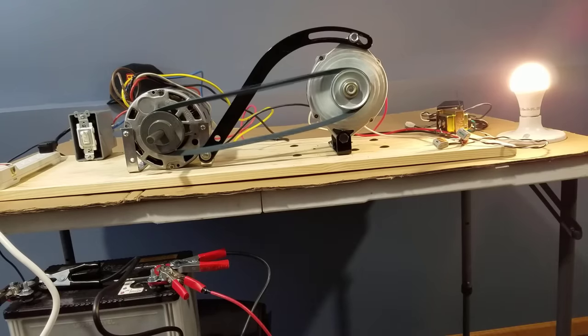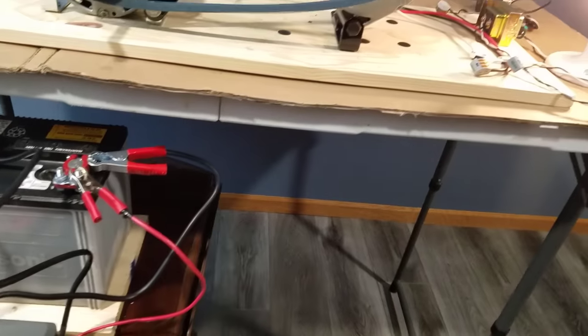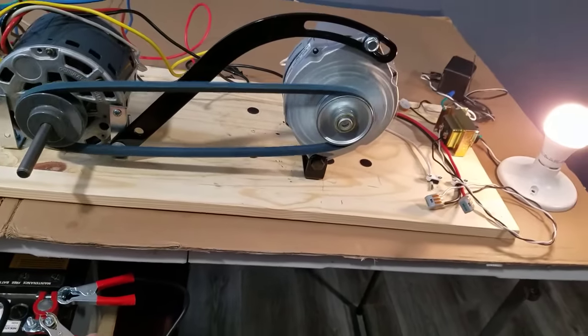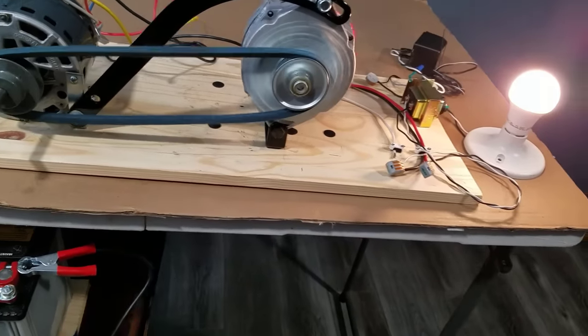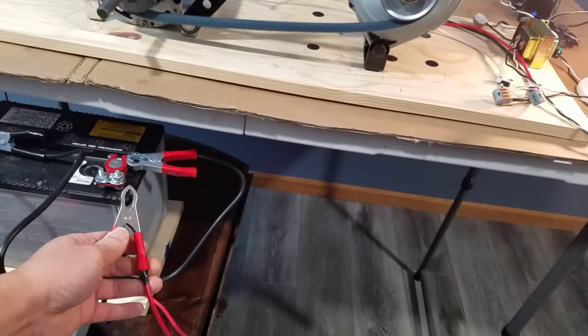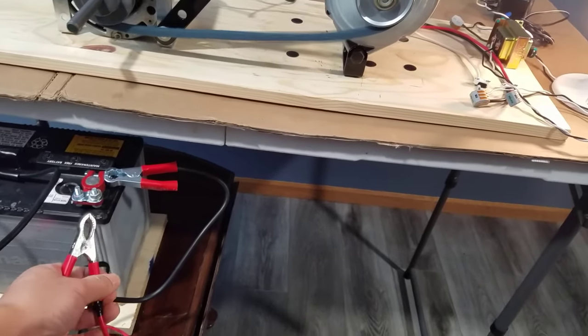And the lights is on! The alternator should continue to provide the AC power output to the light bulb, even if I unplug this positive terminal to the alternator. And yes, it is still providing the AC power to the light bulb.